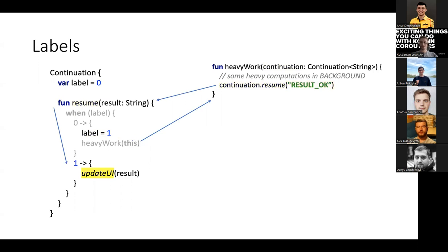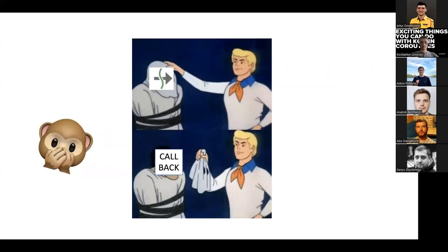When our heavy work is completed, for example in a background thread or some callback, the Kotlin compiler adds a continuation.resume invocation. We call back our continuation.resume, and since we set the label to one before, we jump right into the next branch and execute the next code. Essentially, the Kotlin compiler generates a callback, passes this callback into every suspend function that gets called back, and we jump into the next branch to achieve sequential-looking behavior. It is a glorified, optimized, improved callback that contains a label so we know at which point to continue execution.